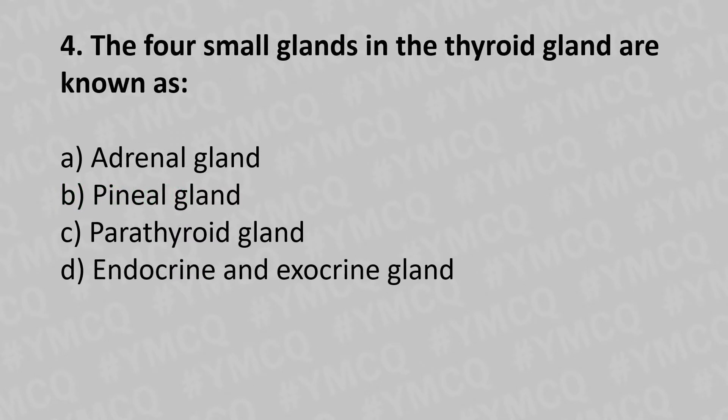Now let's move to question number four. The four small glands in the thyroid gland are known as: option A - adrenal gland, option B - pineal gland, option C - parathyroid gland, option D - endocrine and exocrine gland.